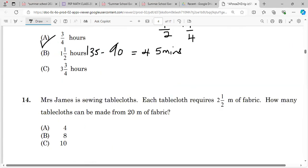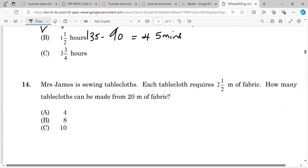Mrs. James is sewing tablecloths. Each tablecloth requires 2 and 1/2 meters of fabric. How many tablecloths can be made from 20 meters of fabric? So again, this looks like a division, right? Because you have 20 meters and you need to get 2 and 1/2. So I'm thinking it's about 8, because if you divide it by 2 you get 10, so it's lower. So it's 8. But let's work it out though.